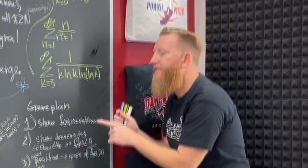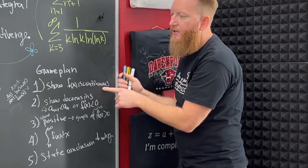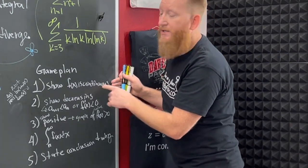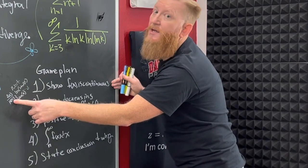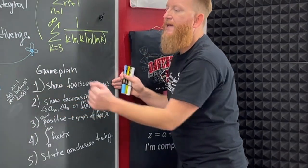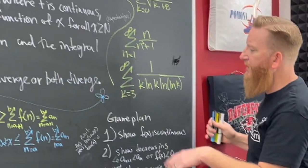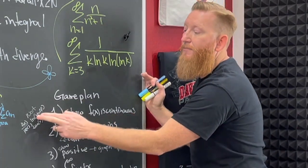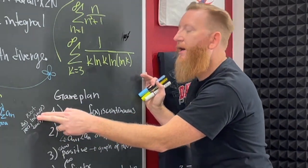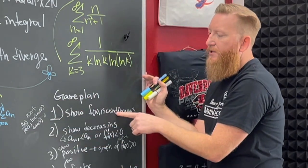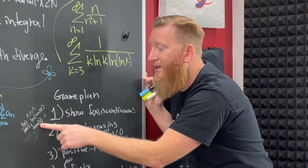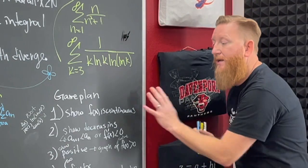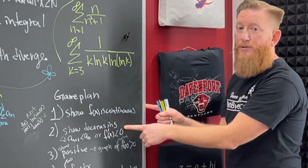The game plan has four steps. First, show that f(x) is continuous. One way is to draw it without lifting your pencil; a more rigorous way is to make sure it's not a rational expression, or if it is, that the domain is not restricted in the tail. For natural log, make sure the argument is positive in the tail. Make sure it's not one of those discontinuous functions — if it behaves like a polynomial, it's continuous.